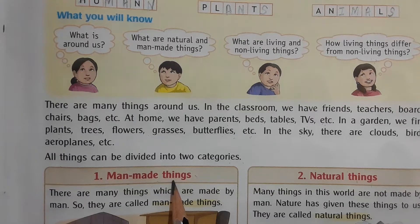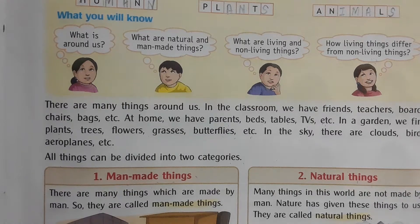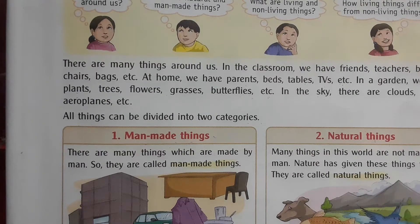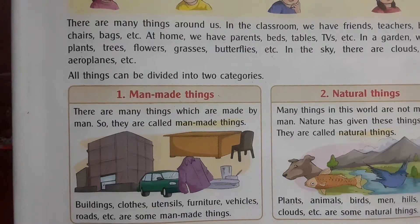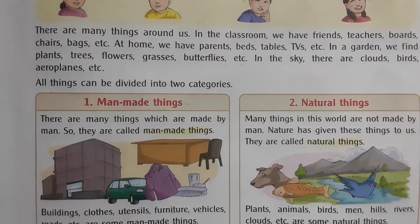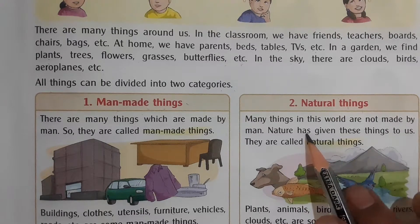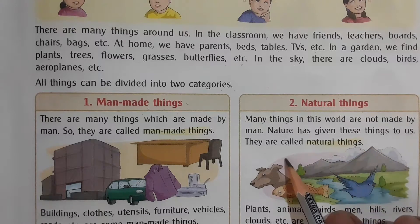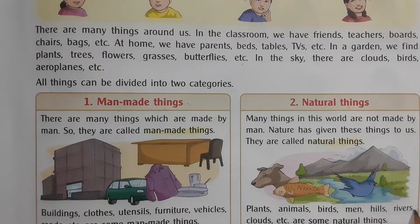The things made by man are called man-made things — such as buildings, clothes, utensils, furniture, vehicles, roads. These are all man-made things. And the things which nature provides us — things that humans cannot make — are called natural things, such as plants, animals, birds, human beings, hills, rivers, clouds. So we can divide all things around us into two categories: natural things and man-made things.